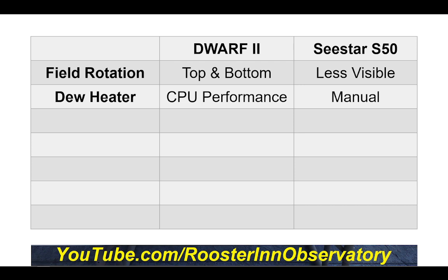Both have dew heaters of sorts. On the Dwarf 2, turning on CPU performance mode heats up the device. On the Sea Star, you can turn it on or off. In neither telescope have I observed any dew forming on the lens, even on extremely humid days in the past couple of weeks.